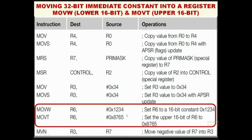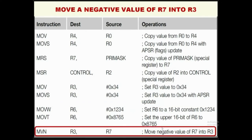To load a 32-bit value such as 0x87651234, first load the lower 16-bit word, then load the upper 16-bit word using MOVT — where T denotes the upper 16-bits. Moving a negative value of R7 into R3 means R7's content is ones-complemented and then moved to R3, which is the MVN instruction. These are the instructions used to move data between registers inside the processor.